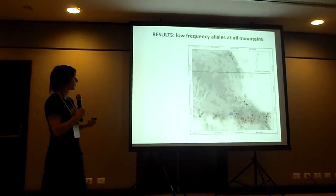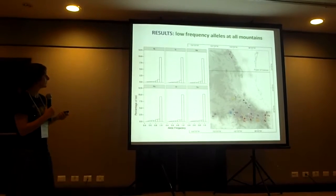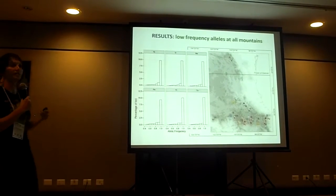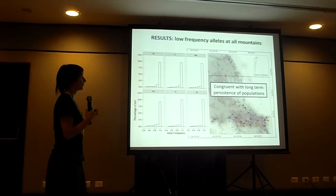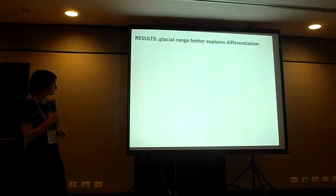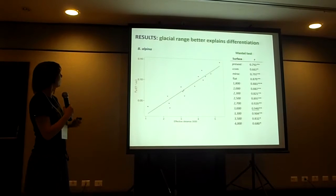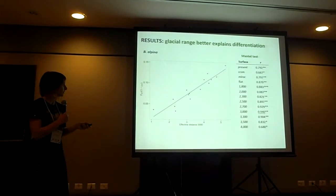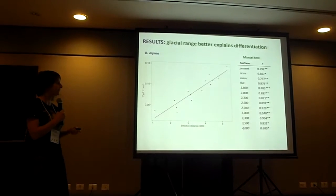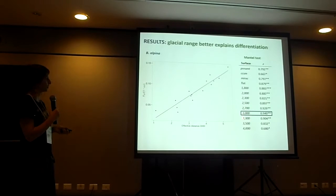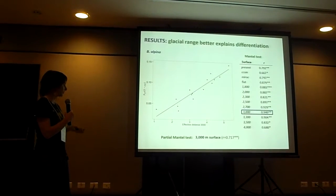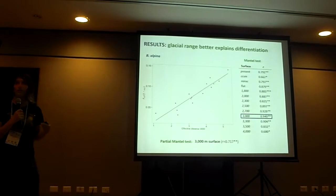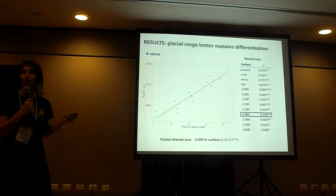Looking at the genetic data, when we examine the allele frequency spectrum without any formal test, we see a high amount of low-frequency alleles, which is congruent with the expectation of long-term persistent populations in each mountain. Regarding differentiation, we found that the glacial range of the species best explains the distribution of differentiation among populations. This is a Mantel test for each resistance surface I showed earlier, and the surface at 3,000 meters above sea level explains the most differentiation — consistent with the expected glacial range, since the species currently grows close to 4,000 meters.